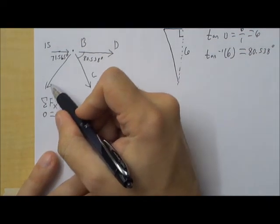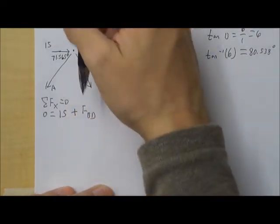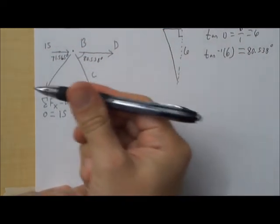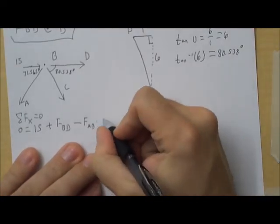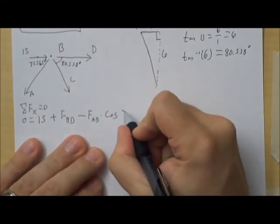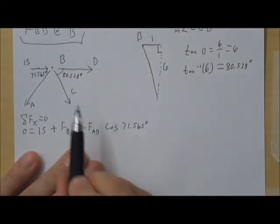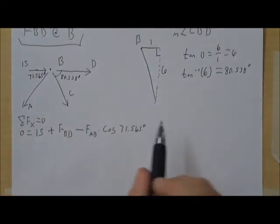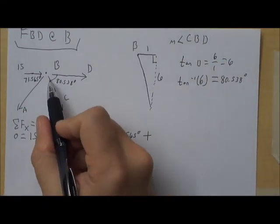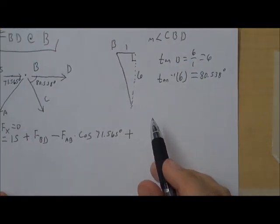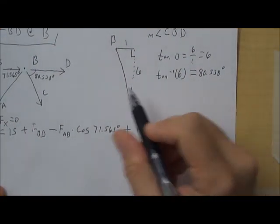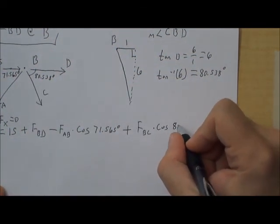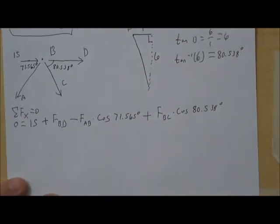Well, we have 15. That's positive because it's going to the right. We have BD. That's also positive plus the force of BD. It's positive because it's going to the right. We have AB. Now AB is going to the left. It's also going down. So it's going to be minus the force of AB. And we only want the part that's going to the left. So we're going to multiply it times cosine of its angle. 71.565 degrees. Not done yet. Because BC is also an x-directional force. It's going to the right, so it's positive. But we only want the part that's going to the right. So we're going to have to multiply it, force BC, by the cosine of 80.538.